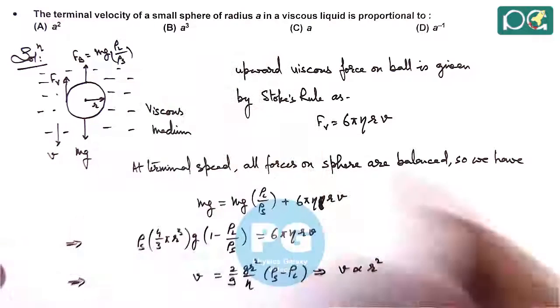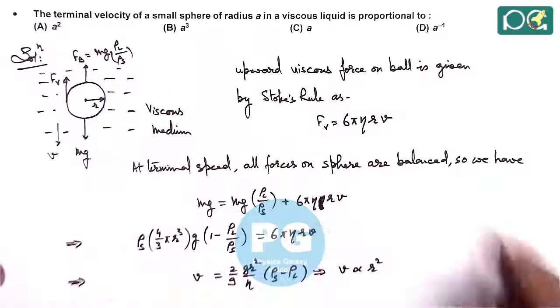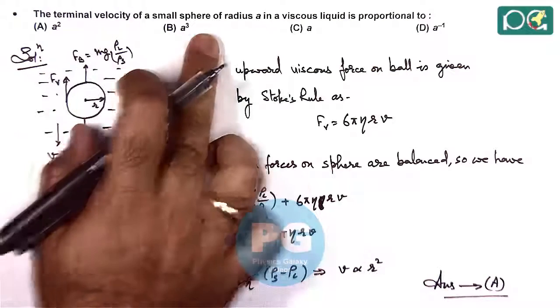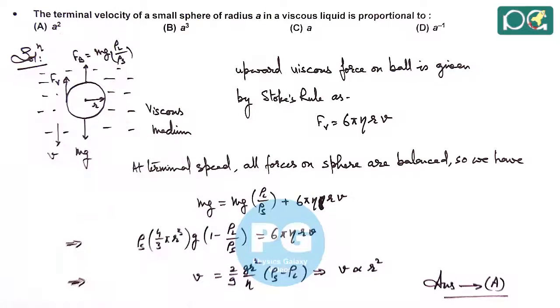And here the radius is A, so it is matching with option A. So answer to this question is option A. The terminal velocity of this sphere will be proportional to A².